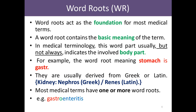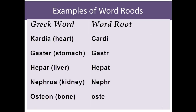Most medical terms have one or more word roots. For example, 'gastroenteritis': 'gastr' indicates the stomach, 'enter' indicates the intestine, combined with the vowel 'o.' Examples of word roots: heart in Greek is 'cardia,' root 'cardi'; stomach 'gaster,' root 'gastr'; liver 'hepar,' root 'hepat'; kidney 'nephros,' root 'nephr'; bone 'osteon,' root 'oste.'